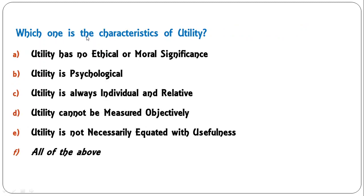Next: 'Which of the following is a characteristic of utility?' — utility has no ethical or moral significance; utility is psychological; utility is always individual and relative; utility cannot be measured objectively; utility is not necessarily equated with usefulness; or all of the above? The correct answer is all of the above — all are characteristics of utility, so F is the correct answer.